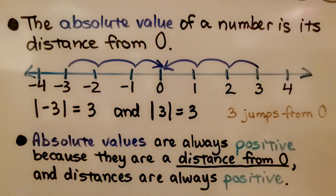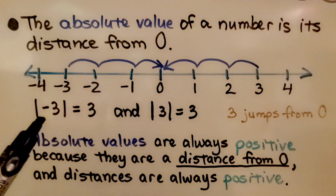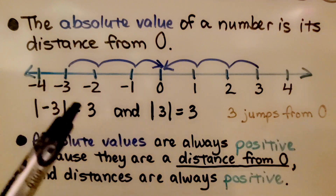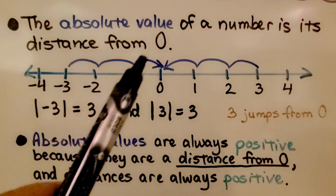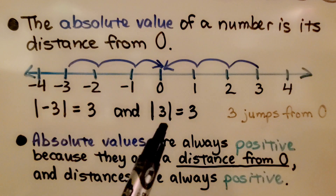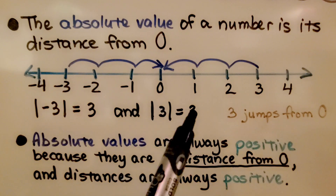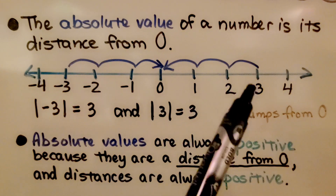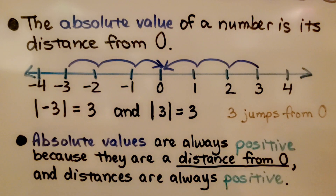The absolute value of a number is its distance from zero. The absolute value of negative three is three — it's three jumps from zero. And the absolute value of positive three is three — it's three jumps from zero. Absolute values are always positive because they're a distance from zero, and distances are always positive.